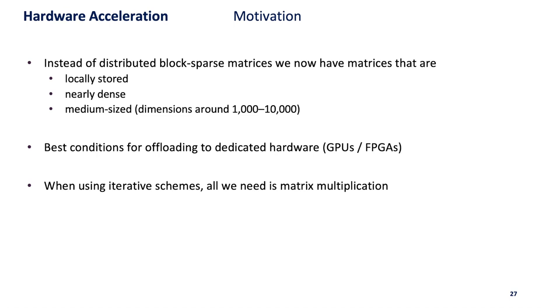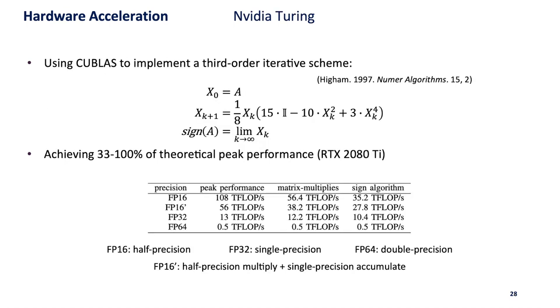If we use these iterative schemes all we need to implement is matrix multiplication. One experiment we did was on NVIDIA Turing GPUs where we used cuBLAS to implement a third order iterative scheme and managed to achieve 33 to 100 percent of the theoretical peak performance depending on which data type we used. For half precision it wasn't as easy to get to peak performance as for single precision.